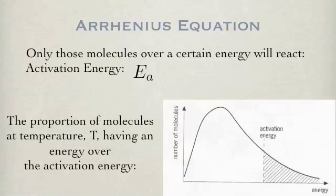The proportion of molecules at temperature T that have an energy over a certain activation energy is the exponent of E sub a over RT.